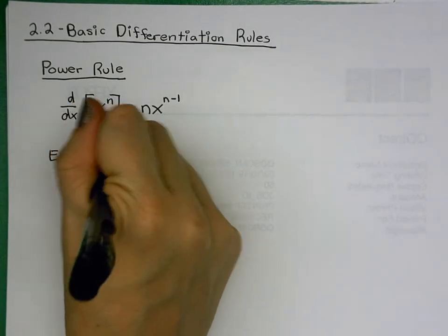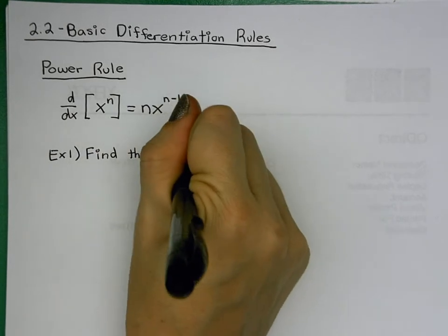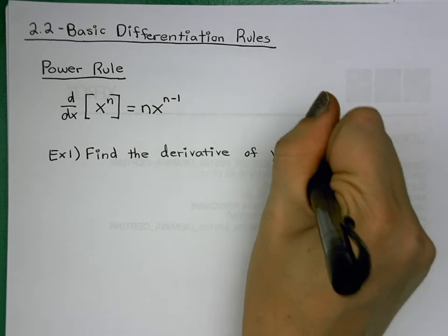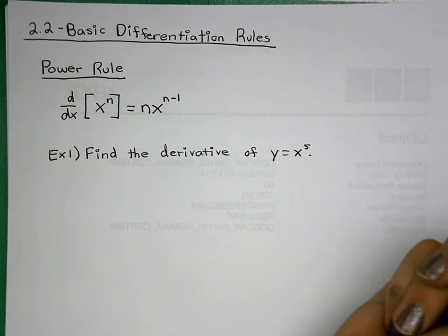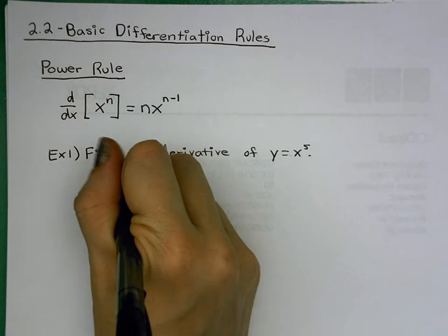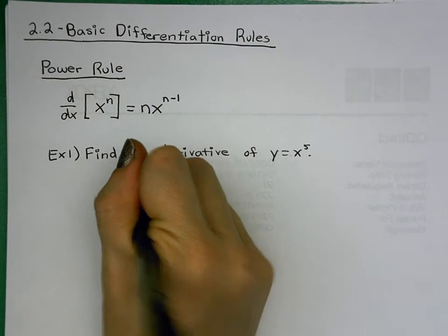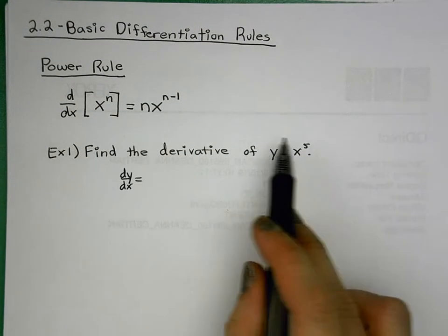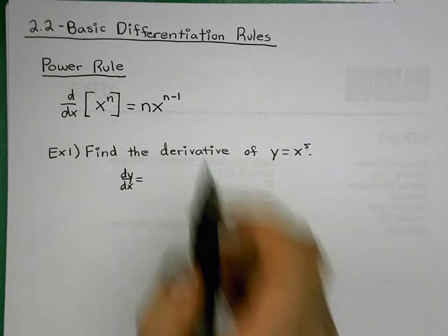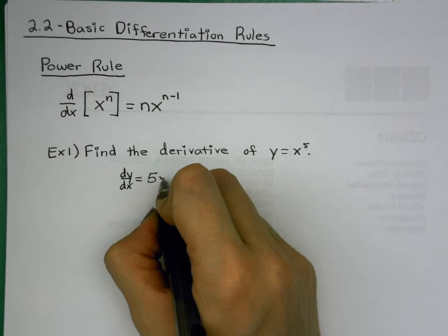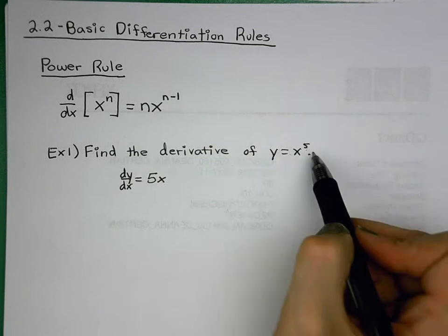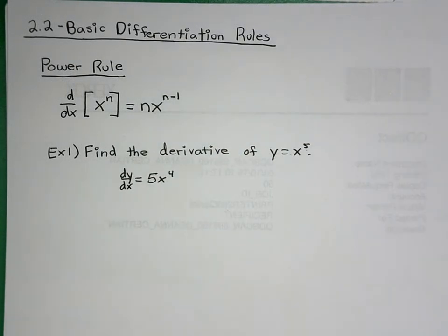Example one: find the derivative of y = x to the fifth. Because we are in the form of a base raised to some exponent, I can use power rule. I bring the five down in front, the base x stays, and subtract one from the exponent — five minus one becomes four. So the derivative is 5x⁴.